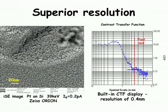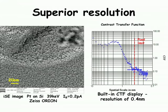Just how well does it work? This is imaging performance from the Orion machine, looking at a platinum film on the specimen surface. The graph on the right plots the microscope's response to features of various sizes. We have excellent detail right down to about 0.4 of a nanometer — a pretty sensational result, significantly better than what you can achieve with an electron-based system.